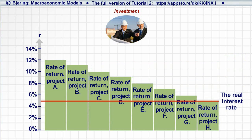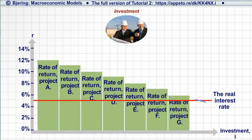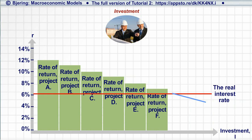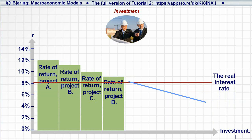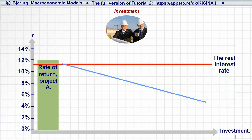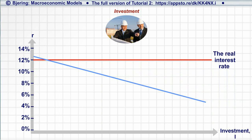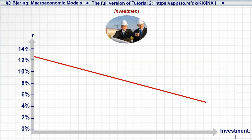The economy's total investment is the sum of the realized investment projects, and it appears that as the real interest rate increases, the sum of profitable investment projects — and thus the economy's planned investment — decreases, as indicated by this line, the investment function.